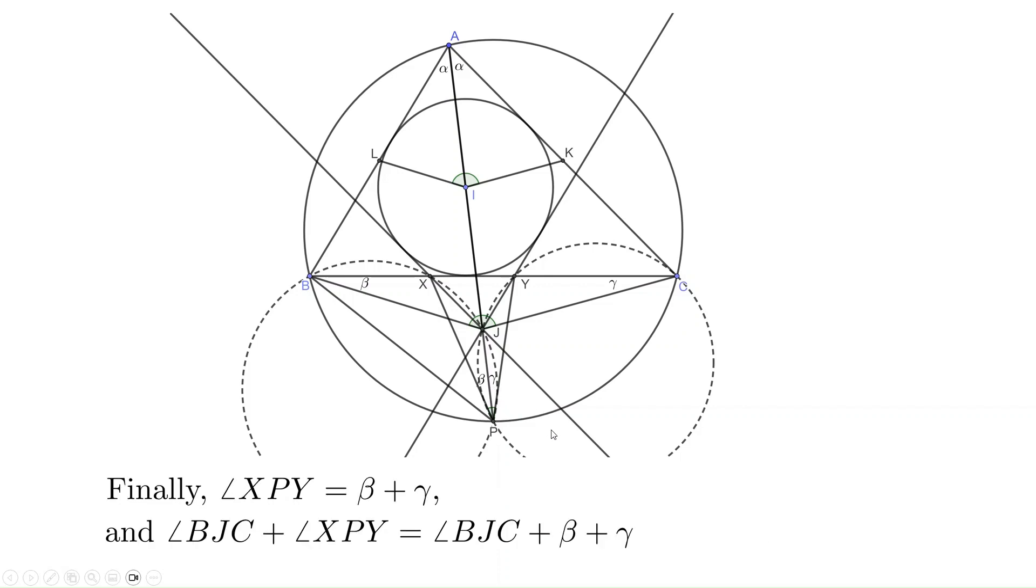As a result, one of our target angles, XPY, has measure beta plus gamma. And therefore, the sum of the two angles, BJC plus XPY, is simply BJC plus beta plus gamma. Is this 180 degrees? Let's see. BJC plus beta plus gamma is the sum of three angles of a triangle.